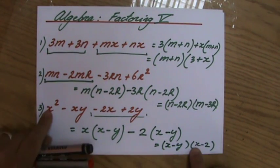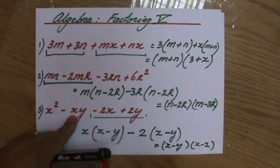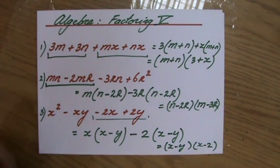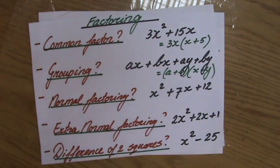x times x is x squared. x times minus 2, minus 2x. Minus y times x, minus yx here, or minus xy. And minus y times minus 2 is a positive 2y. Good. So we have done grouping now.